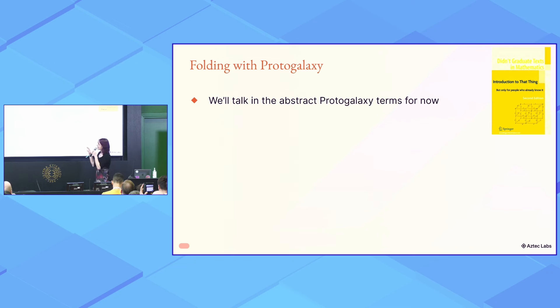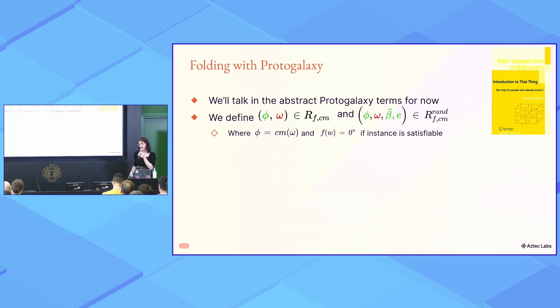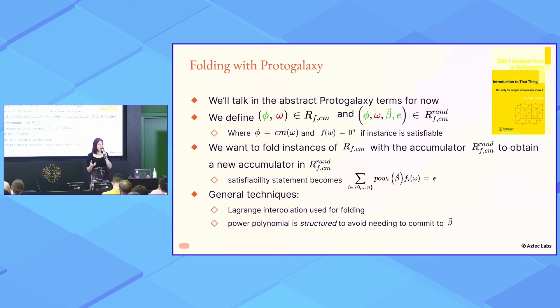Let's talk about folding with protogalaxy. First, in abstract terms. So, in protogalaxy, we define this concept of an instance, which is a very overloaded term in this field. And an instance is composed of some phi and some omega, where phi is the commitment of omega with some commitment function. And omega has some function f with which we can establish its satisfiability. And the aim is to fold these instances into a relaxed, randomized version of it, which we refer to as accumulators, where we relax the satisfiability statement by introducing a power vector and error sum result. And the general techniques with which we do this is Lagrange interpolation for folding. And because the power polynomials is structure, we avoid the need to commit to beta.